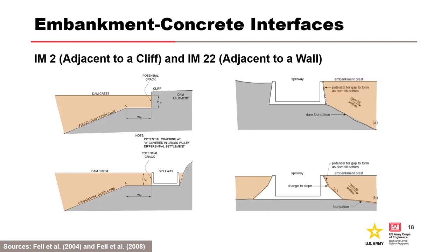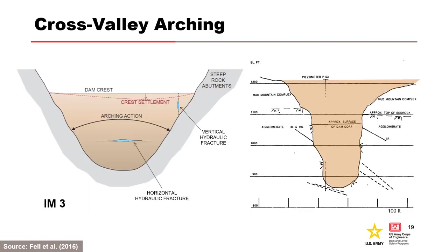IM-2 and IM-22 are for cracking or a gap that may form adjacent to walls or cliffs due to the earth fill settling away from the wall during and after construction, especially with steep walls. Deformations of flexible or under-designed retaining walls — such as those designed for active instead of at-rest earth pressure — can also lead to cracks or gaps. IM-3 is for cross-valley arching, which can occur in narrow and steep valleys, where vertical stresses are shed onto the sides of the valley, which can lead to hydraulic fracture.